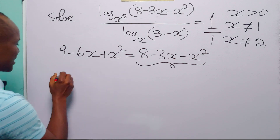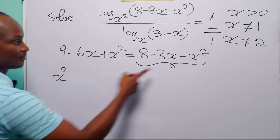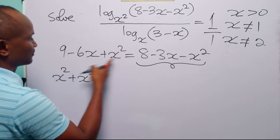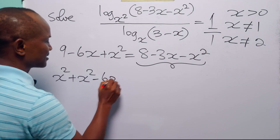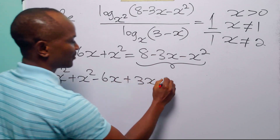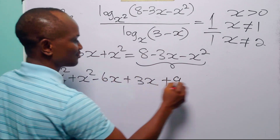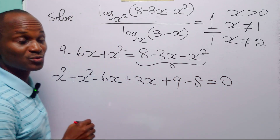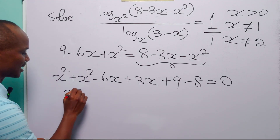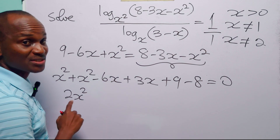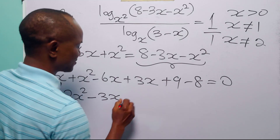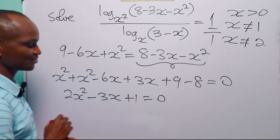Moving all terms to the left-hand side: x² plus x² is 2x²; minus 6x plus 3x is minus 3x; and 9 minus 8 is plus 1. So we are left with the quadratic equation 2x² minus 3x plus 1 equals 0.